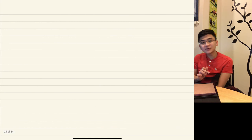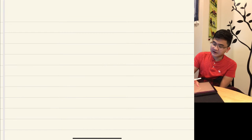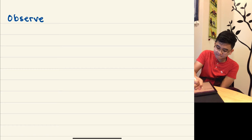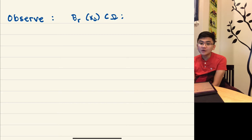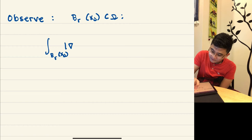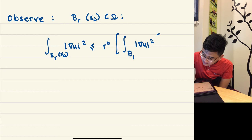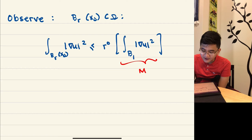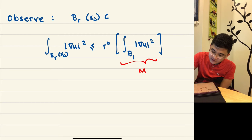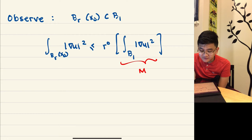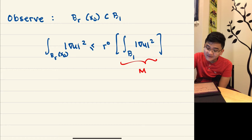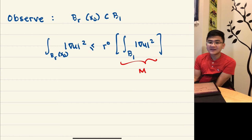For the first iteration: observe that for a ball B_r(x₀) ⊂ Ω, we have the integral of |∇u|² over B_r ≤ r⁰·C_B₁, so the gradient control holds with μ = 0 (trivially, since B_r(x₀) ⊂ B₁). So this trivially holds as our starting gradient control M. Then we use the second lemma to give control on the function. The book mentions there exists some radius r₁, and I'm going to fix some r₁ such that B_{r₁} is compactly contained in B₁.